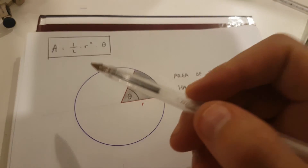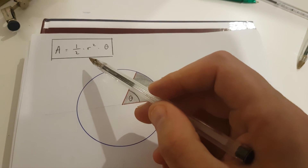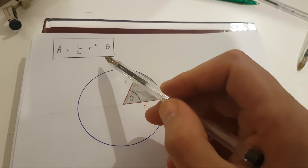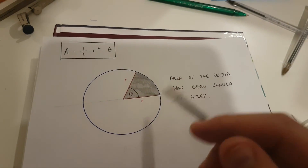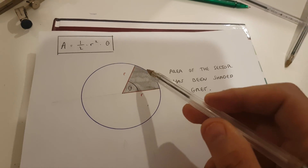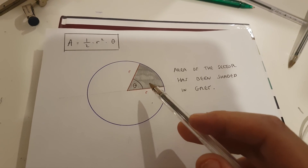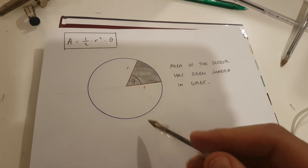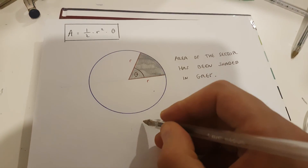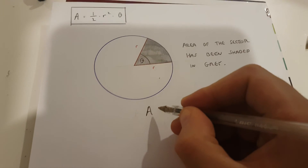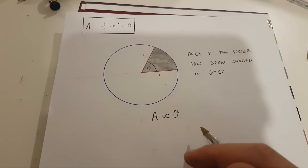In this video I'll be demonstrating why the area of a sector is half multiplied by r squared multiplied by theta. The area of this sector has been shaded in grey. What we've also got to acknowledge is that the area of this sector is proportional to the angle theta.